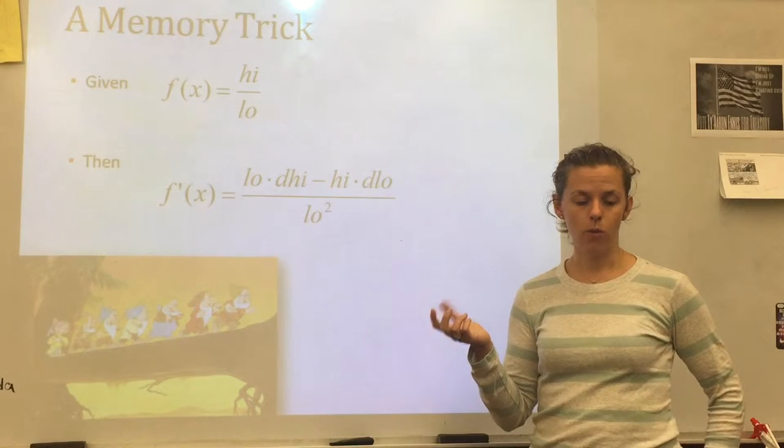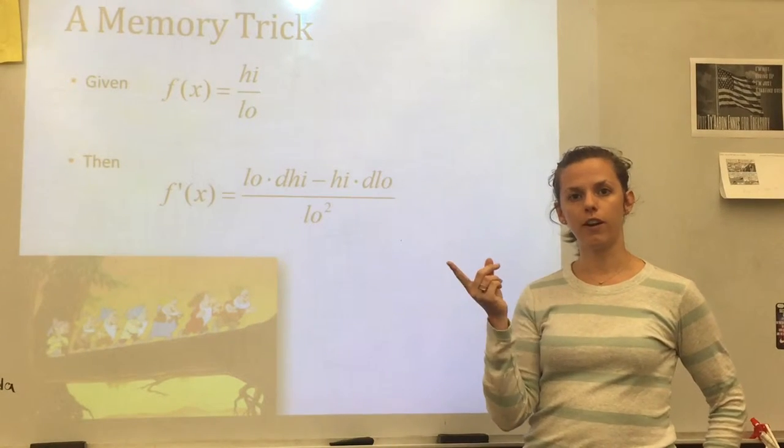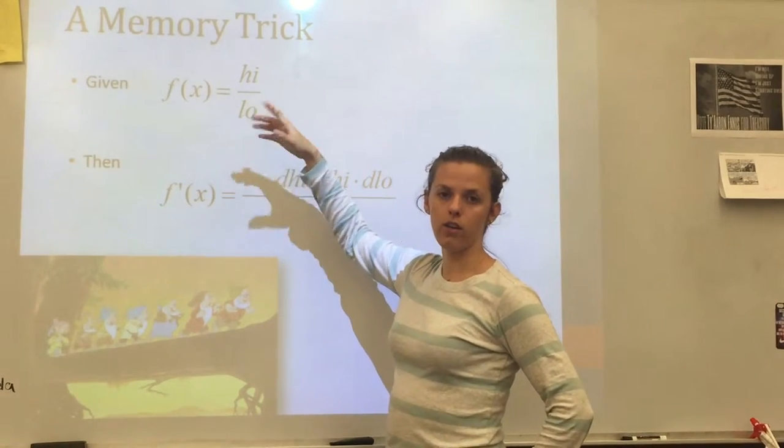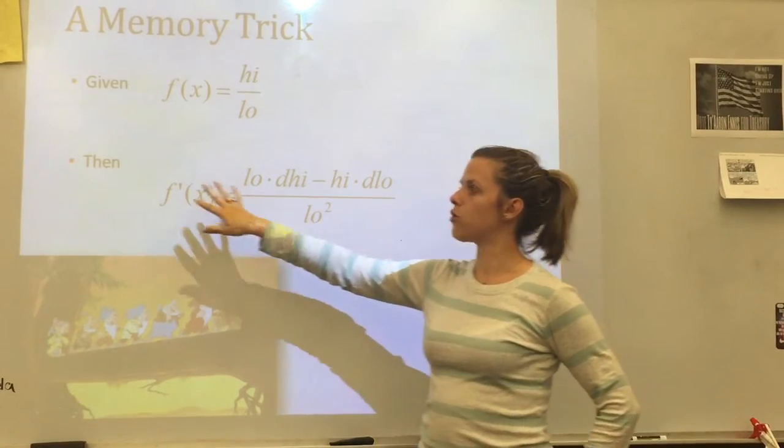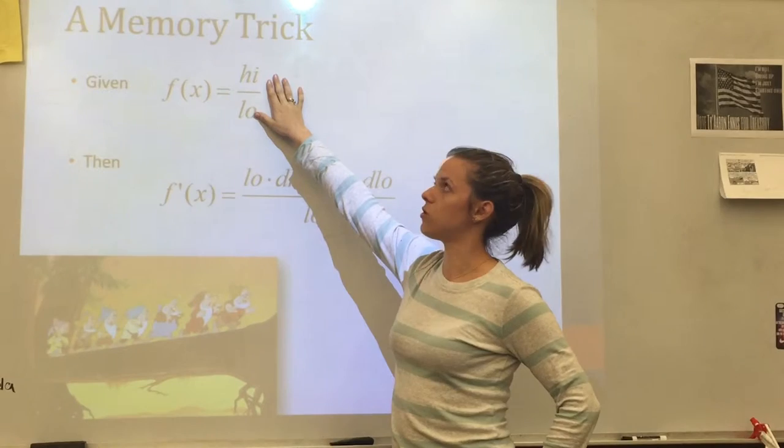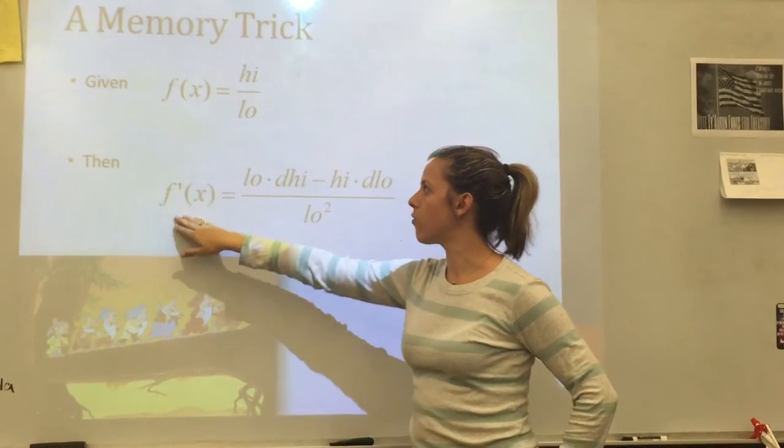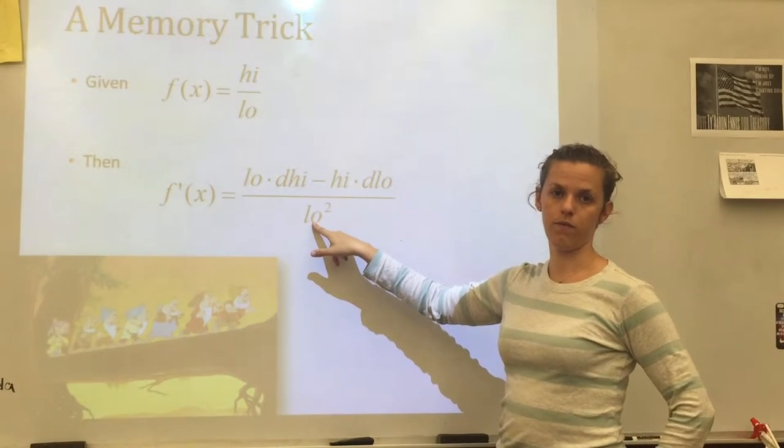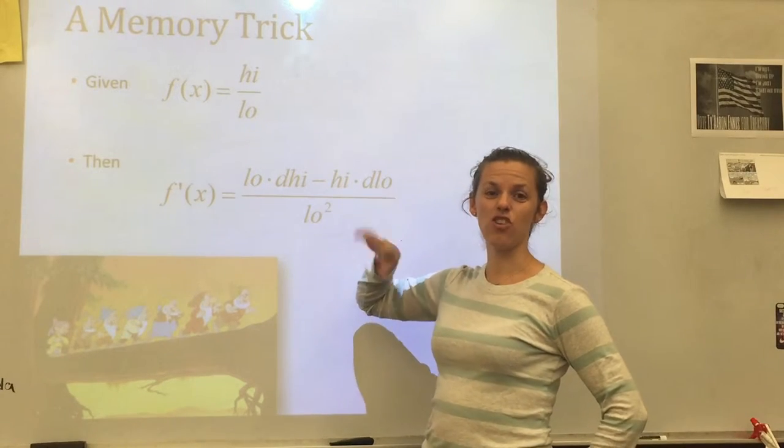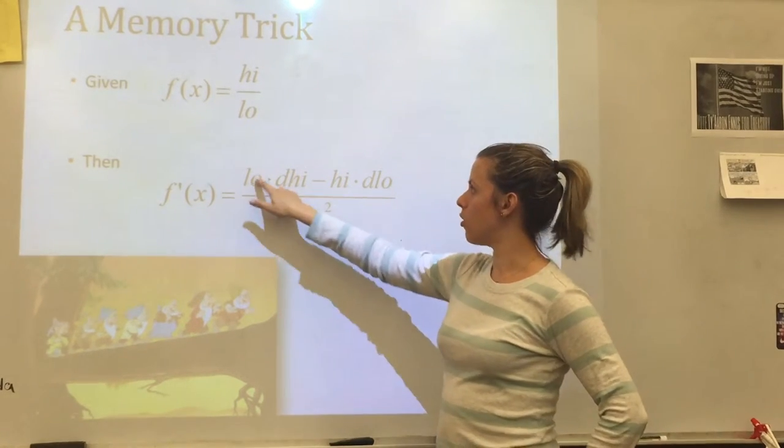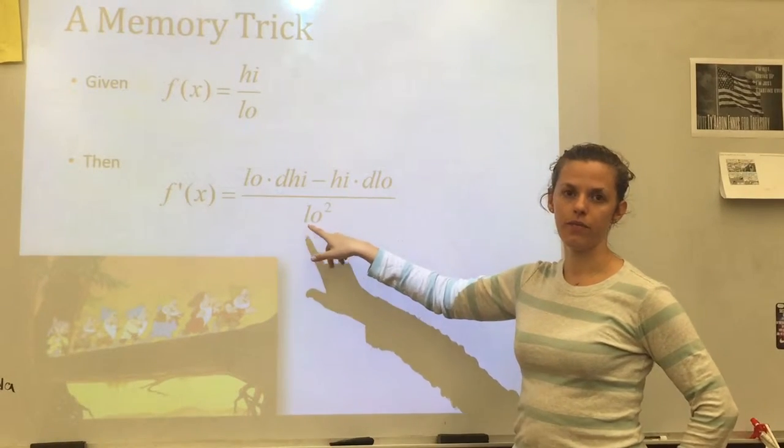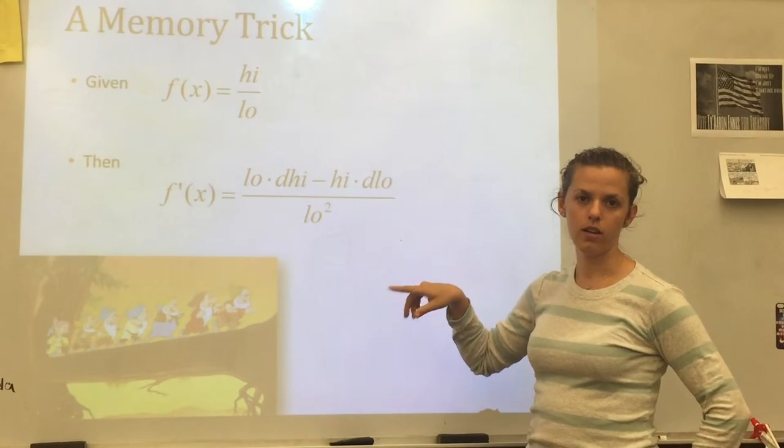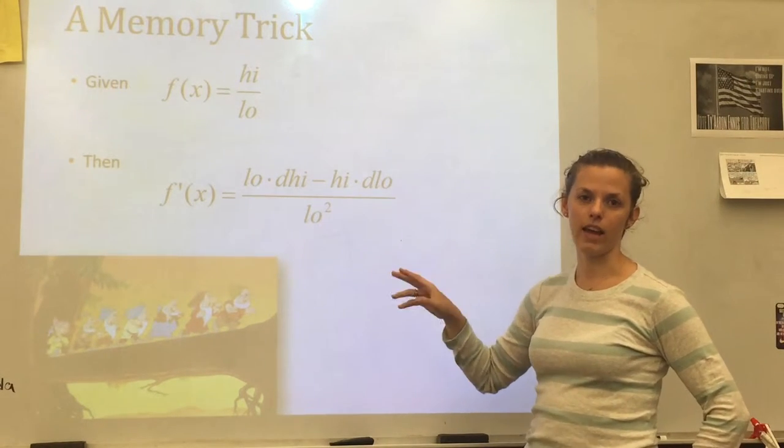That formula, we're going to learn it verbally first. So we're going to call the numerator high and the denominator low. I'll use hi when I write it for high and lo for low. So the derivative is the formula for the derivative of a quotient. If you start with f(x) equals high over low, f'(x) equals low d-high minus high d-low over low squared. So I'm going to say it again and then you're going to repeat with me at home. Low d-high minus high d-low over low squared. So the derivative of a quotient is low d-high minus high d-low over low squared.